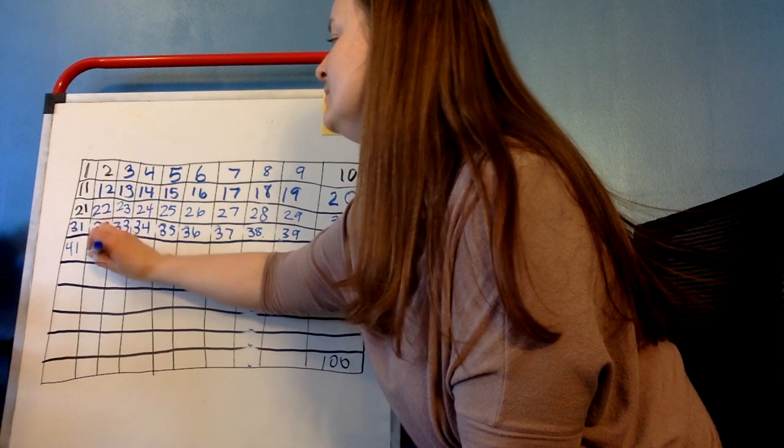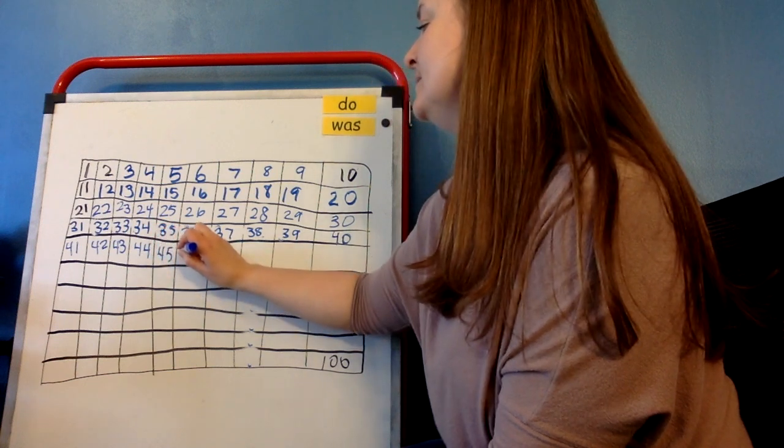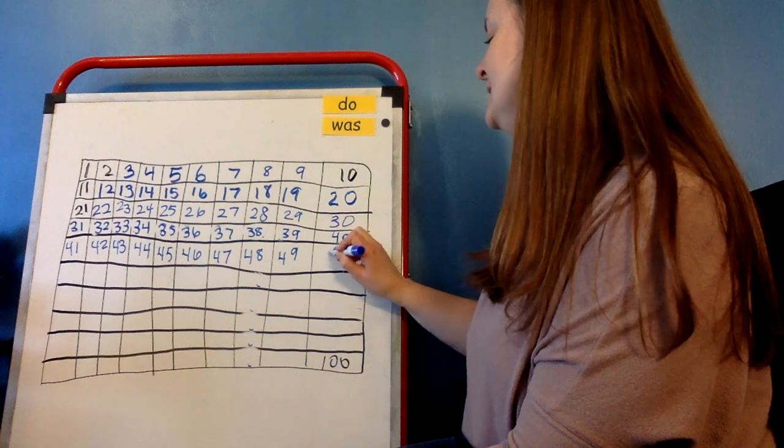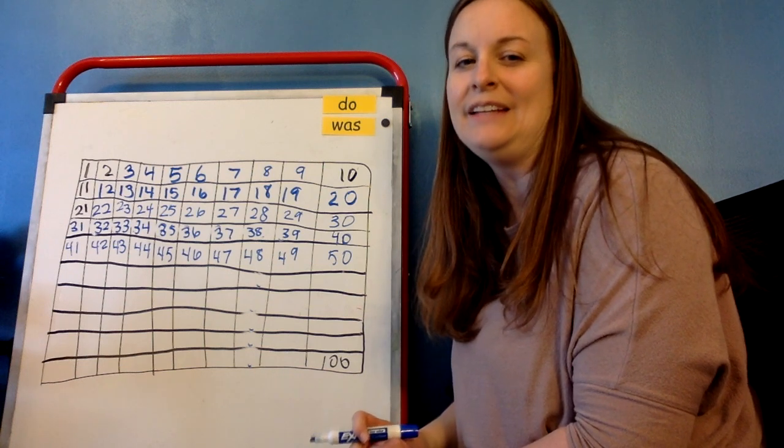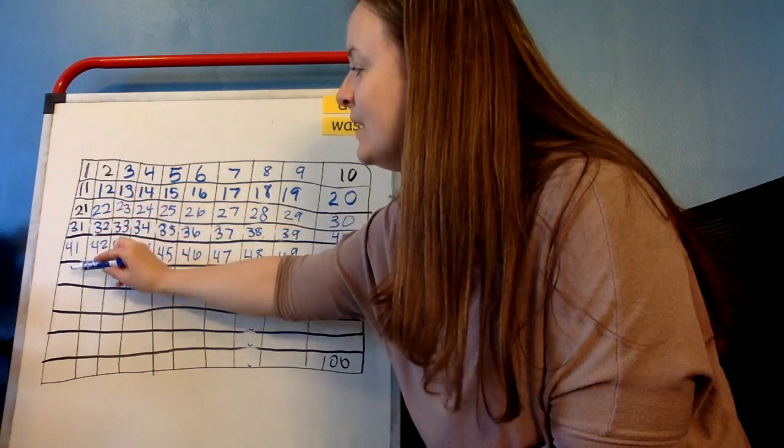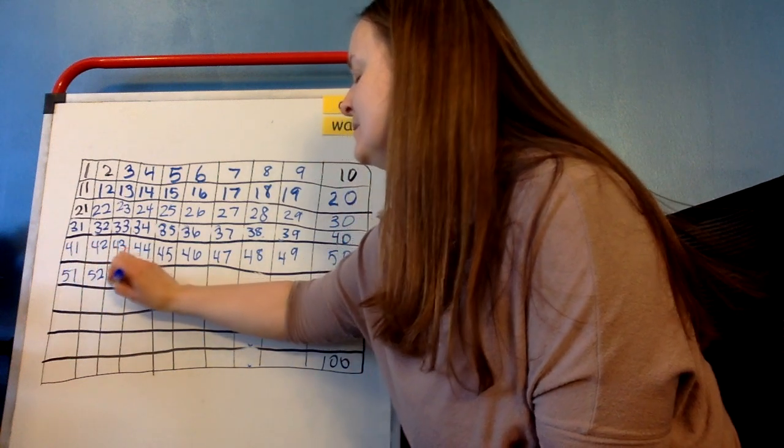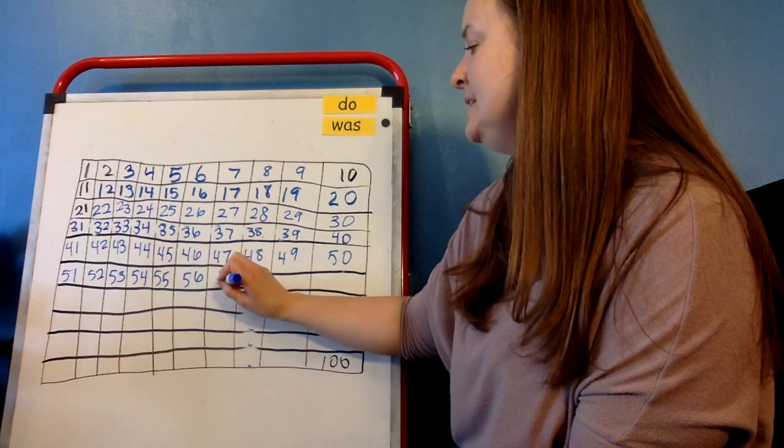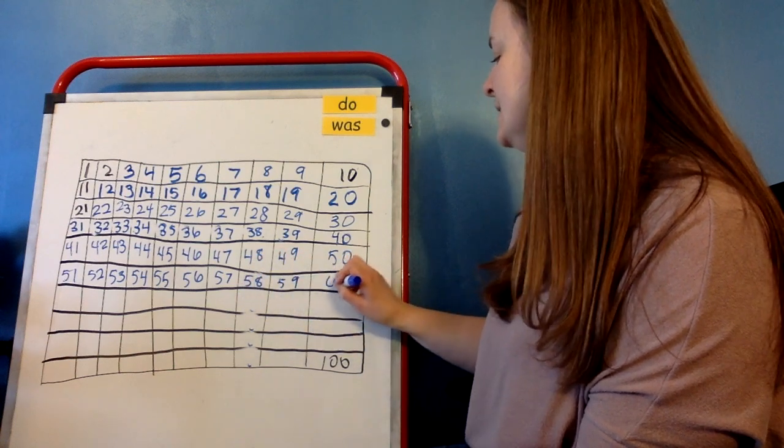So let's go ahead and do the 40s. So I'm going to write 41, 42, 43, 44, 45, 46, 47, 48, 49, 50. We're halfway to our 50. We're halfway to our 100. Okay, now we're going to keep going. So I'm checking myself 0, 1, 2, 3, 4, 5s in this row. And I'm going to do 51, 52, 53, 54, 55, 56, 57, 58, 59, 60.